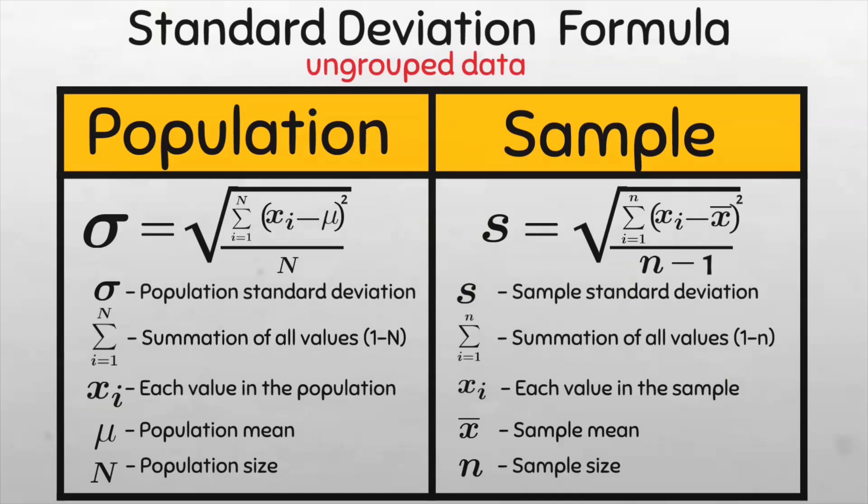So we read the population formula as the square root of the average of the squared deviations from the mean of all the values in the population, while we read the sample formula as the square root of the sum of all squared deviations from the mean of the sample divided by the sample size minus 1.